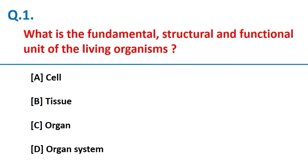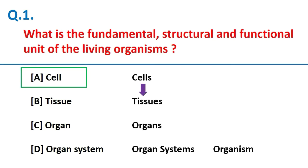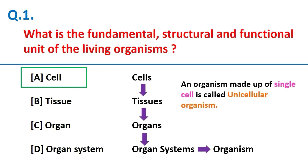The fundamental structural and functional unit of living organisms is the cell. Multiple cells come together to make tissues, tissues come together to make organs, organs come together to make organ systems, and organ systems come together to make organisms. An organism can also be made up of a single cell, and this type of organism is called a unicellular organism.